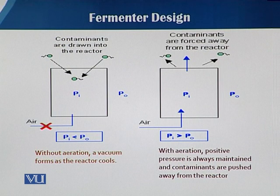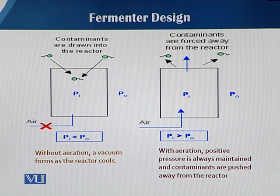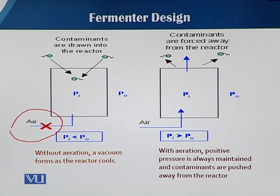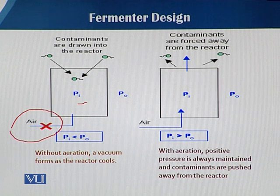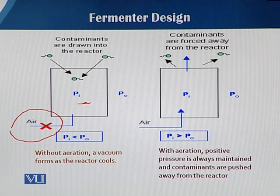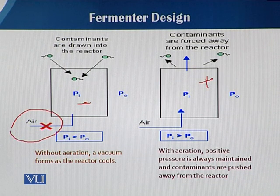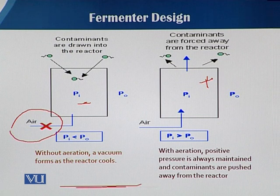In this slide you can see that in case of negative pressure inside when there is no aeration — no oxygen supply or any other gas supply — the contaminants can be sucked in. In the other case, when the pressure inside is greater than the pressure outside, it keeps those contaminants away from the fermentation vessel. By this diagram you can easily understand the role of positive pressure inside the fermentation vessel.